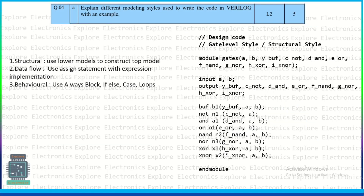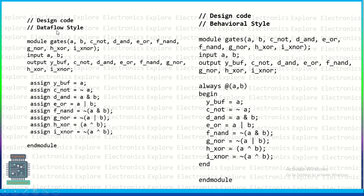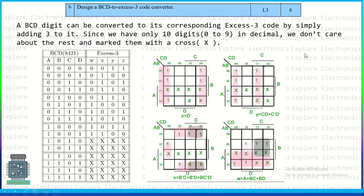The next question explains different modeling styles in Verilog with an example. There are three main styles: structural (gate-level) style, data flow style, and behavioral style. In gate-level style, all gate primitives are instantiated directly. In data flow style, assign statements are used with Boolean expressions. In behavioral style, an always block is used with all inputs in the sensitivity list, and outputs are defined within always-begin-end.